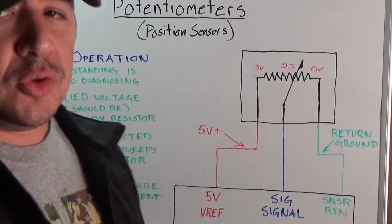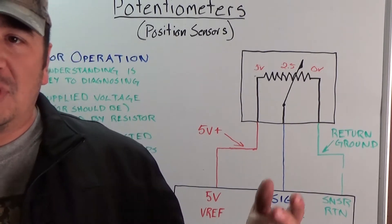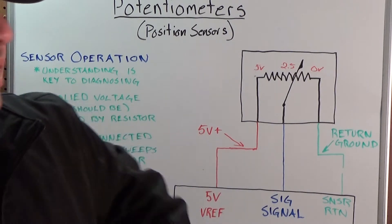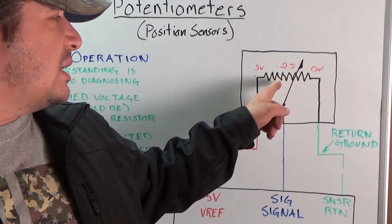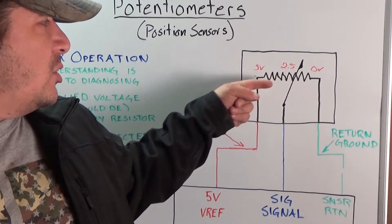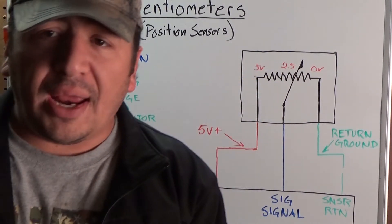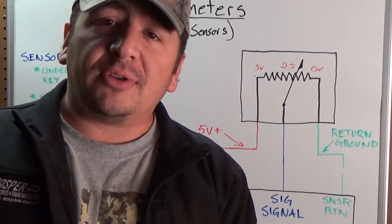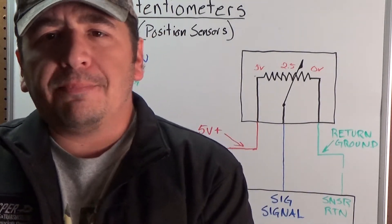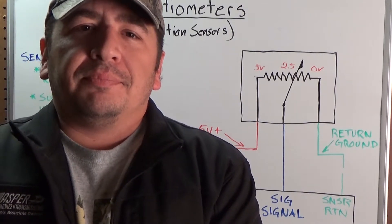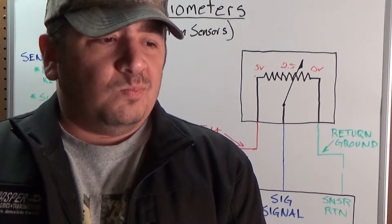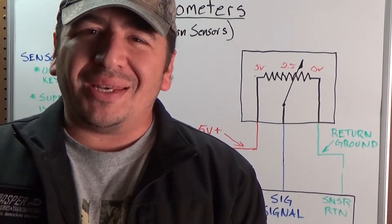And that's why when you're doing some of these testing procedures, you're going to do a slow steady sweep and you're going to watch for dropouts because it's the contacts between the wiper arm and the surface of the resistor that get worn out. And that's your most common point of failure on these kinds of sensors. But we'll get into that in the next video. So that is a quick basic look at how these work and there's not really much more to go in depth on.